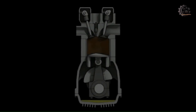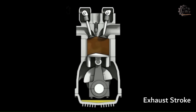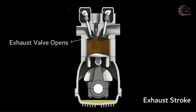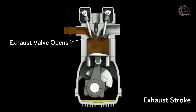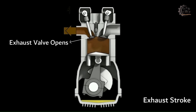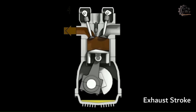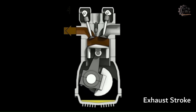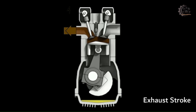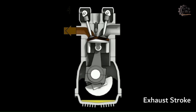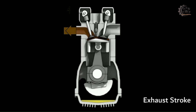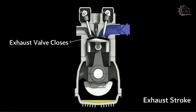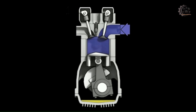Exhaust stroke: The piston reaches the bottom center at the end of the power stroke. The exhaust valve opens and the burnt gases escape at greater speed. The piston moves up from bottom center and pushes out the remaining burnt gases from the cylinder. At the end of the exhaust stroke, the exhaust valve closes and the cycle is repeated. For every four strokes of the piston, the crankshaft rotates two revolutions.